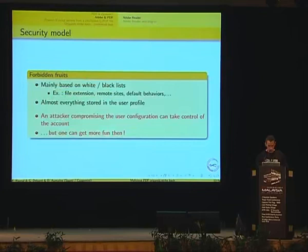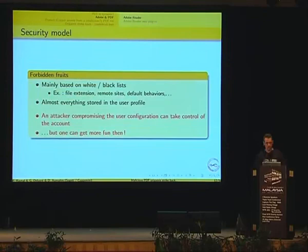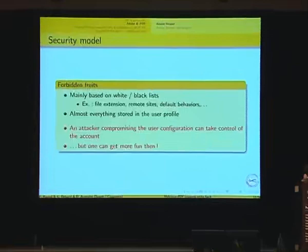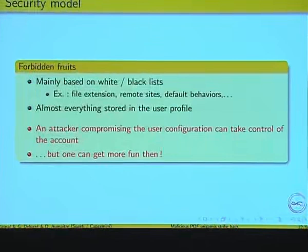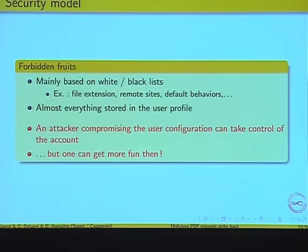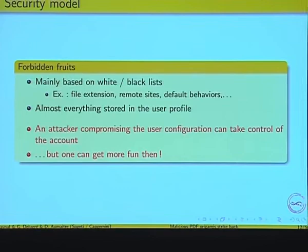What's the security model? It's mainly based on a whitelist and blacklist — either things are authorized or not. For instance, you're not allowed to connect to arbitrary IPs or to execute .exe files. This configuration is also accessible in the user directory, so if you gain any way to modify this configuration file, you can do whatever you want with Adobe Reader. But if you're a real attacker, you'll usually just install a user-level rootkit and won't care about Adobe's configuration.